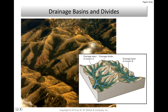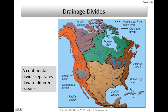Here we can see drainage basins and divides. A ridge top between two streams would be the divide separating one drainage basin from another. Looking at North America, the Mississippi River has a very enormous drainage basin. The continental divide separates waters that go into the Mississippi drainage basin from those of the Snake River, Columbia River, Colorado River, Rio Grande, and the Red River in Texas.